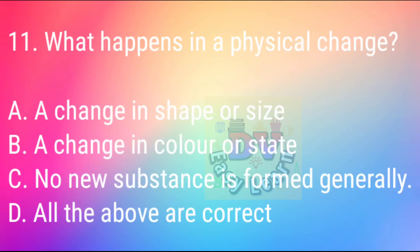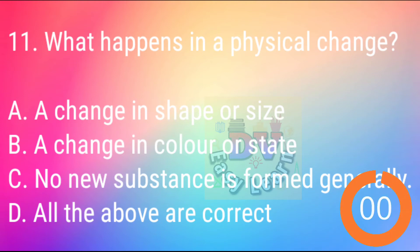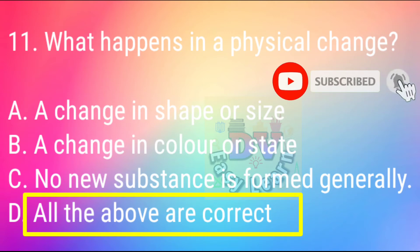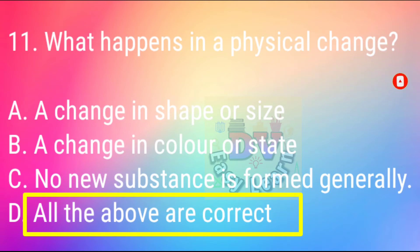Question No. 11: What happens in a physical change? Correct answer: All the above are correct — a change in shape or size, a change in color or state, and no new substance is formed generally.